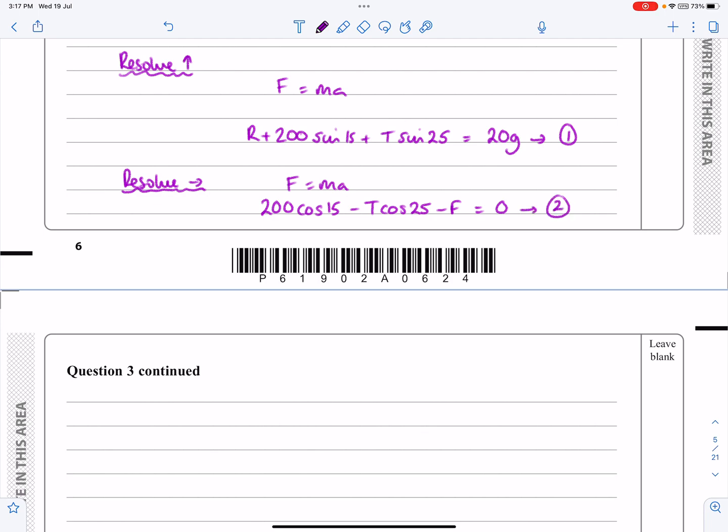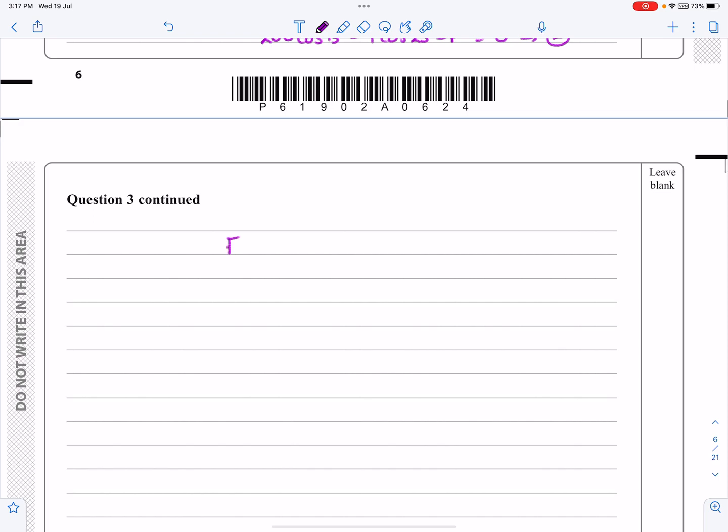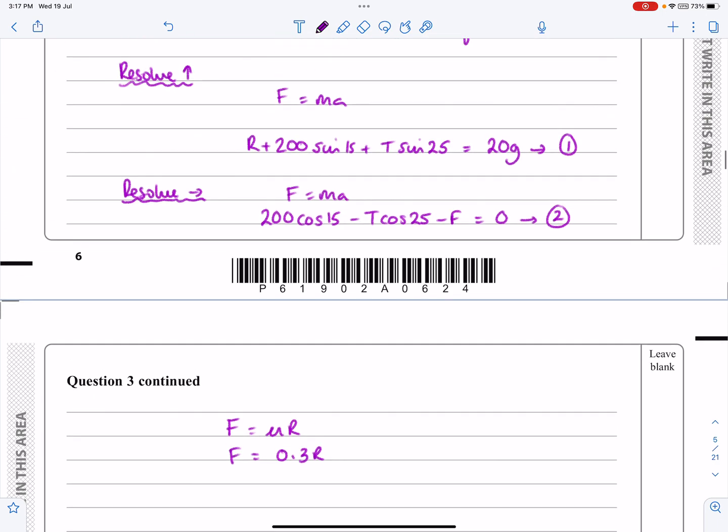And obviously as always once I've done my resolving I know F is equal to mu R so F is going to be equal to 0.3 R.